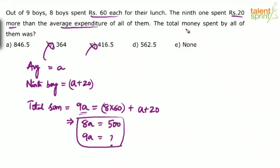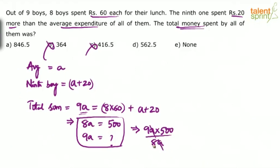We know that eight A is 500. Total money spent is nine A. So nine A equals nine into 500 divided by eight — A gets cancelled. 500 by eight: 40 by 8 is 5, and 60 by 8 is 7.5, giving 62.5. Then 62.5 into nine equals 562.5. That is the answer.